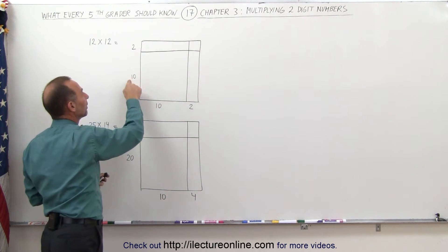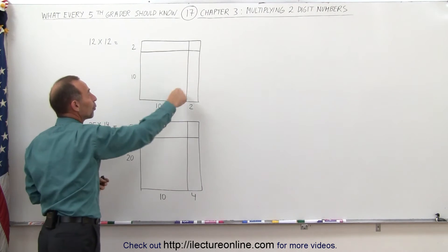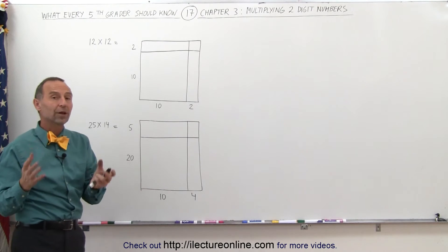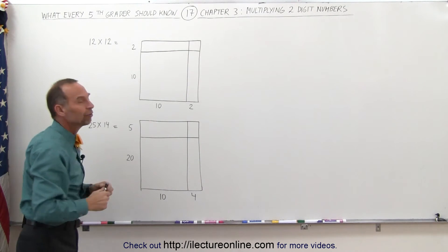it's the same thing as multiplying 10 times 10, 10 times 2, 10 times 2, and 2 times 2. In other words, each of these four sections represents one of the four multiplications enclosed in multiplying 12 by 12.